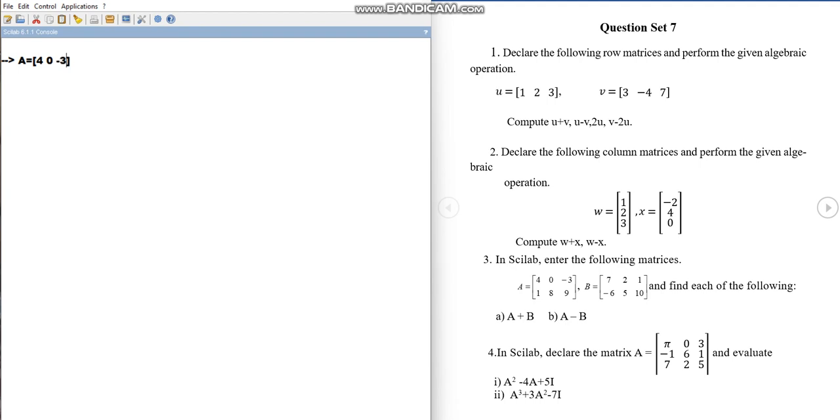Then the second semicolon, since we are writing the second row, which is 1, 8, 9. So this way we can declare a matrix of order 2 by 3. The rows are, separate rows are separated by semicolons. So this is your matrix A.